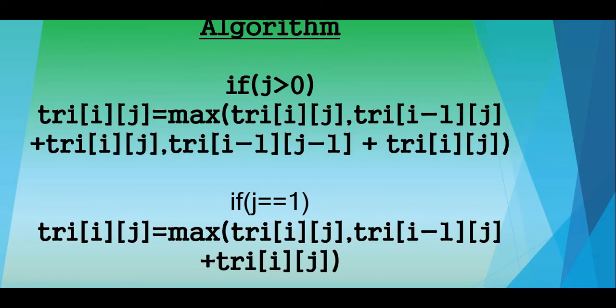Here is the algorithm: if j is greater than 0 — meaning we are not at the first column — then the solution matrix cell tri[i][j] is the maximum of its current value and tri[i-1][j-1] (the cell diagonally above) plus the value of the current cell. If we are at the first column, then tri[i][j] is the maximum of its current value or the cell directly above it plus the current cell value.